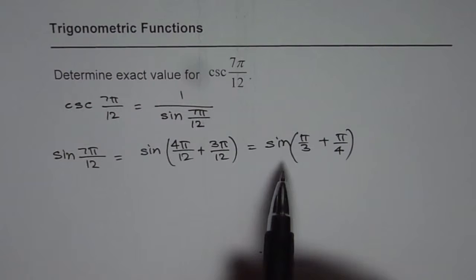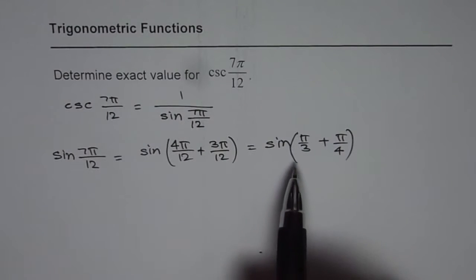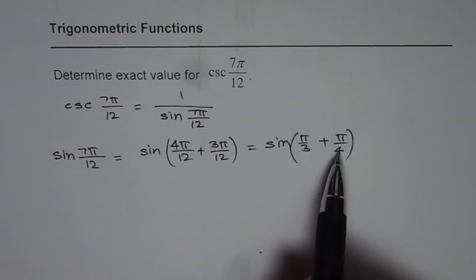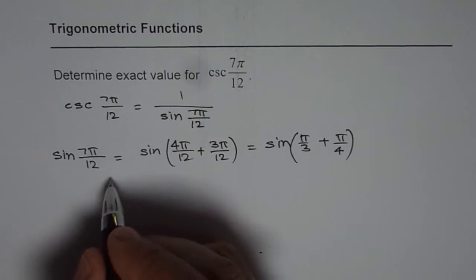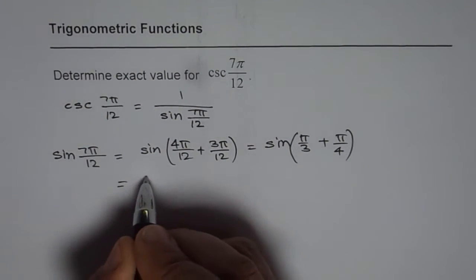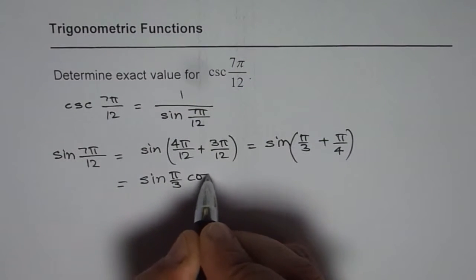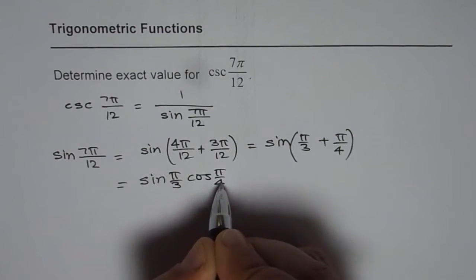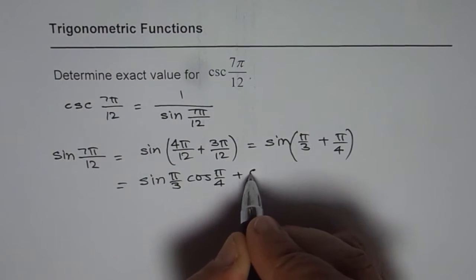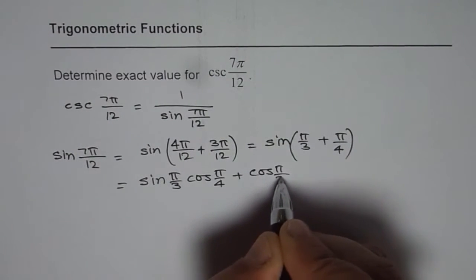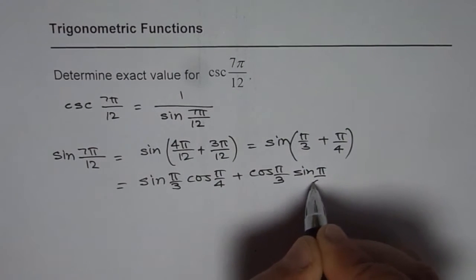Now we can use the compound angle formula which is sine a plus b equals sine a cos b plus cos a sine b. So we can write this as equal to sine pi by 3 cos pi by 4 plus cos pi by 3 sine pi by 4.